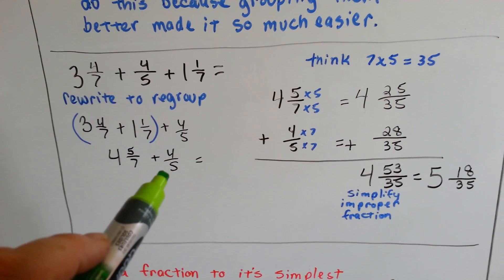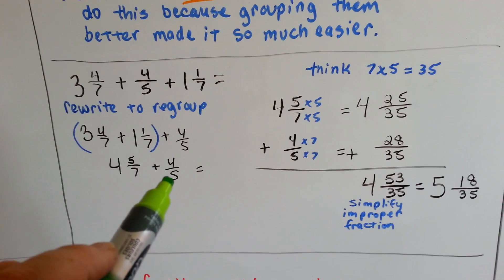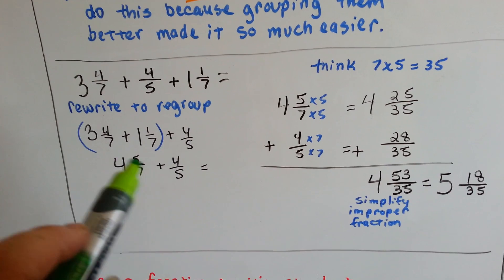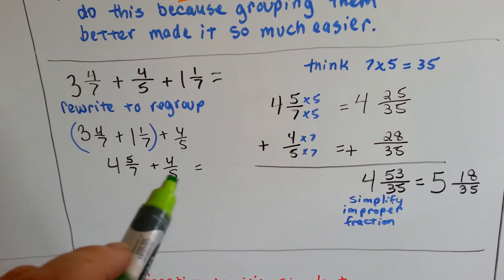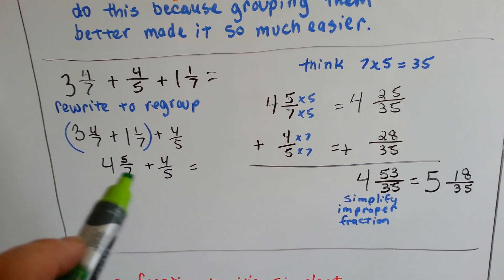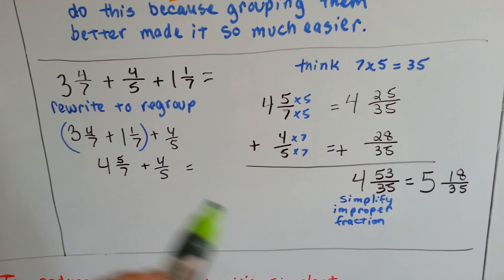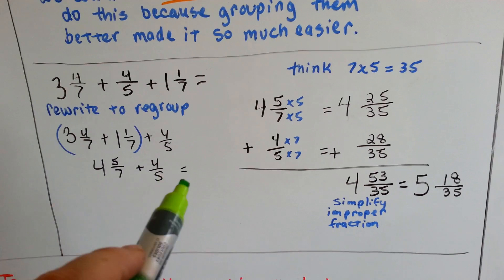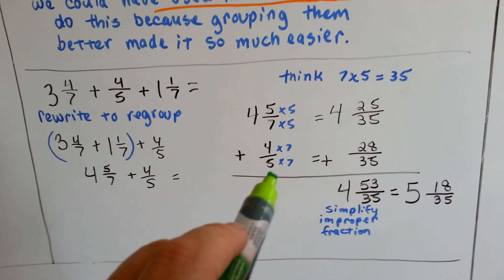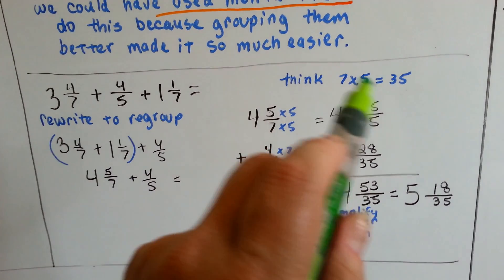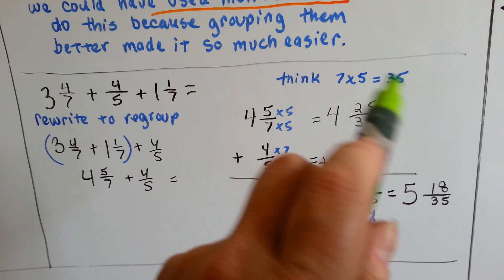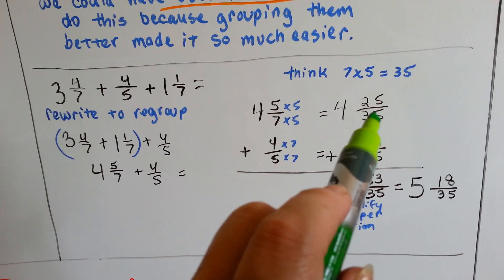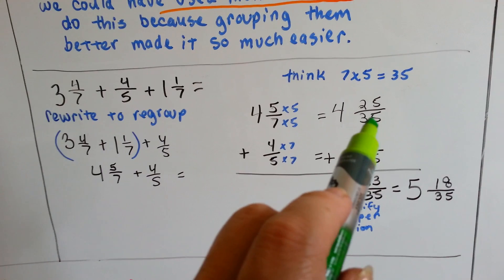Now we need to add the 4 fifths, but because our denominators are different, we need to get them the same — a common denominator. Because we've got a 7 and a 5, the quickest way to do it is to multiply 7 times 5, which will give us a denominator of 35.